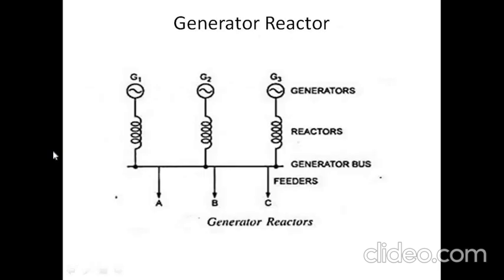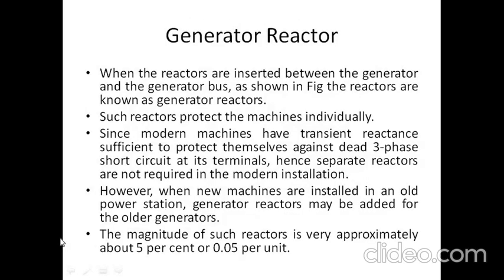When the reactor system is connected in series with the generator, it is called a generator reactor system. When the reactor coil is connected in series with the feeder, it is known as a feeder reactor. When reactor coils are connected in series with the bus bar, it is called a bus bar reactor system. In the figure, G1, G2, G3 are the alternators, and this is the generator bus bar. A, B, C are the feeders, and the reactor coil is connected between each generator and the bus bar.